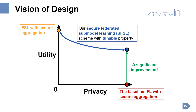To address the privacy and accuracy problems while enjoying efficiency, we propose a secure federated submodel learning scheme with differential privacy. At the same privacy level as the baseline, that is federated learning with secure aggregation, our design greatly improves the utility. Further, our scheme allows clients to improve utility by degrading privacy.